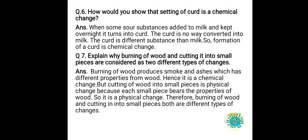Question number 7: explain why burning of wood and cutting it into small pieces are considered as two different types of changes. When you burn wood, you get ashes or coal — a new substance is formed. When you cut wood into pieces, you still have wood.